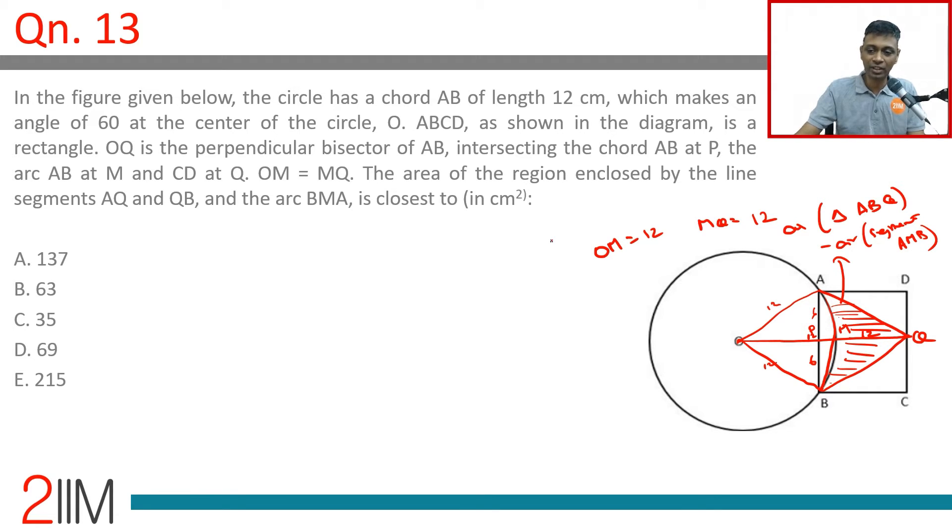Area of triangle ABQ we can do: half into base into height. But we still need to find the height. Base could be AB. How do we do that? OAB is an equilateral triangle. The altitude is root 3 by 2 times a. We have an equilateral triangle of side 12, so OP is root 3 by 2 into 12, which is 6 root 3.